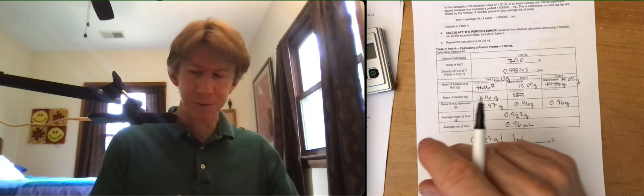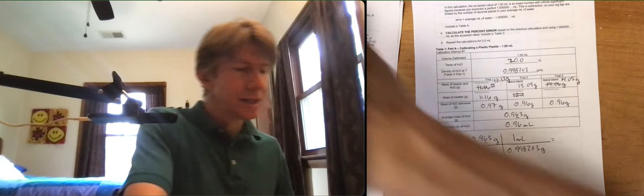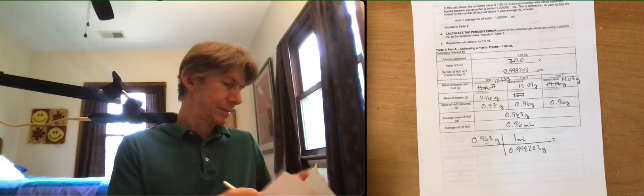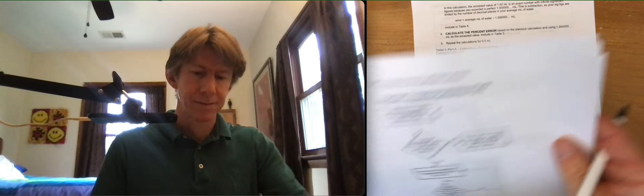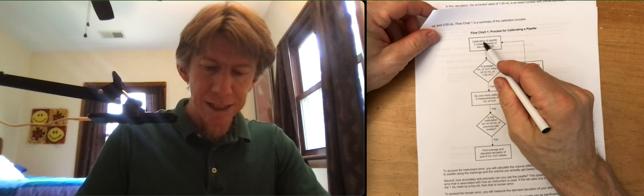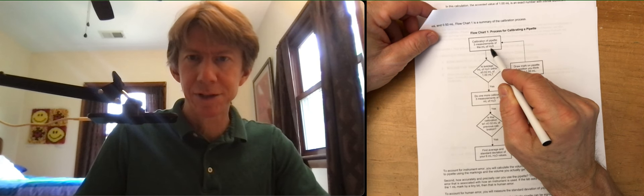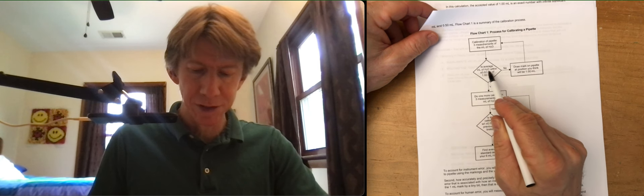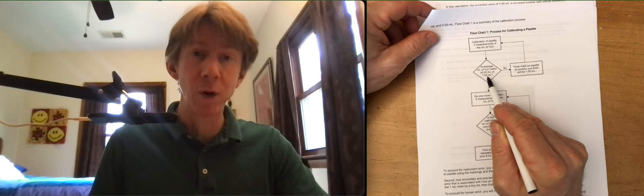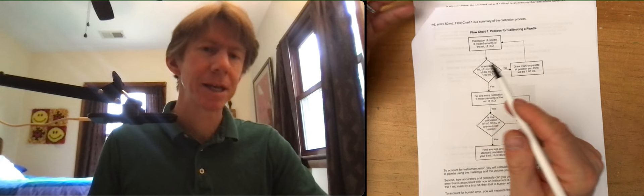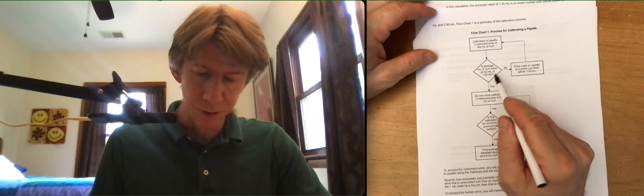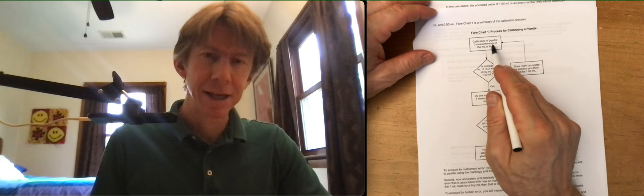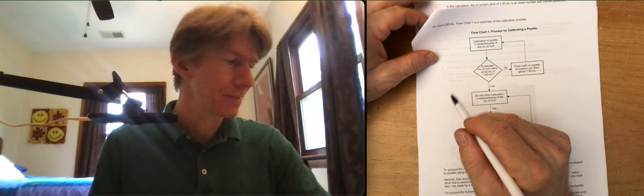That is coming back to our flow chart. I have done calibration of pipette. Three measurements of the milliliters of H2O. Is the average milliliters of H2O within plus or minus 0.02 milliliters of 1.00? No. Nope. Draw a mark on pipette at position you think will be 1.00 milliliters. And do it again.